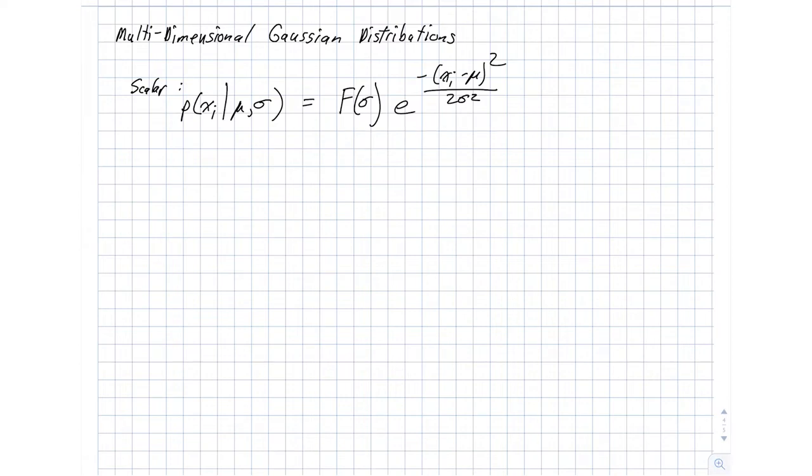So with this formulation, we have a PDF that might look something like this, where that mean determines where the peak is of that density function, and the width here is determined by our sigma parameter.